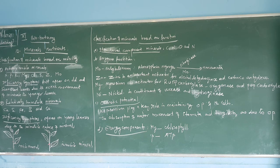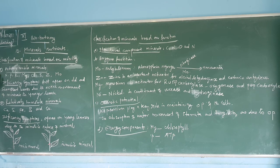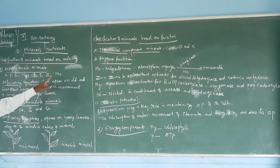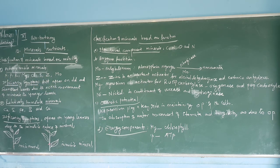The mobile minerals include nitrogen, phosphorus, potassium, magnesium, chlorine, sulfur, zinc, and molybdenum. These minerals are capable of movement within the plant.